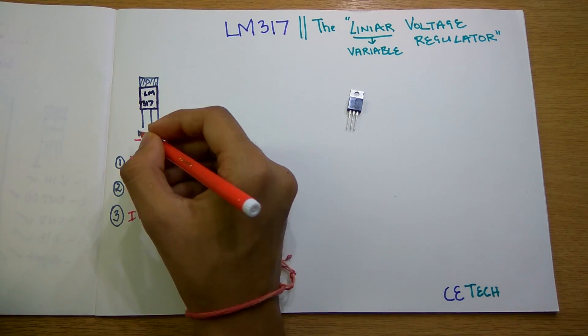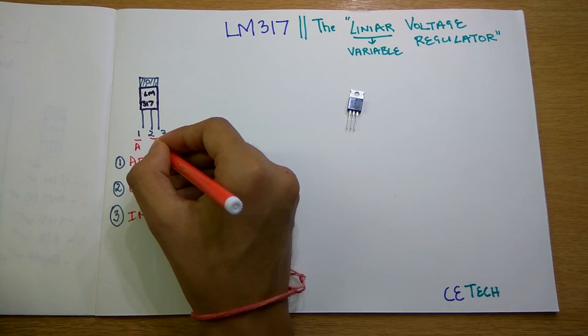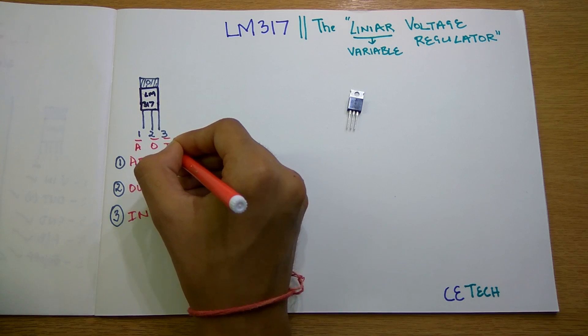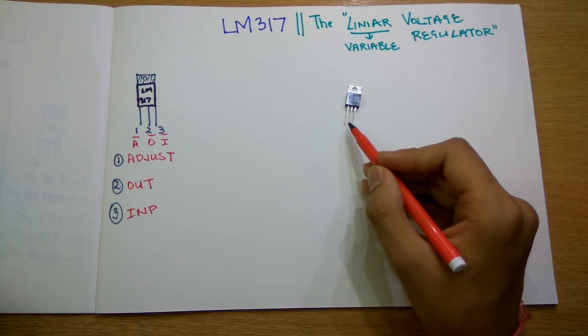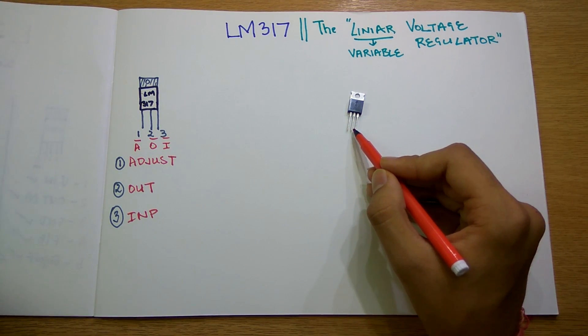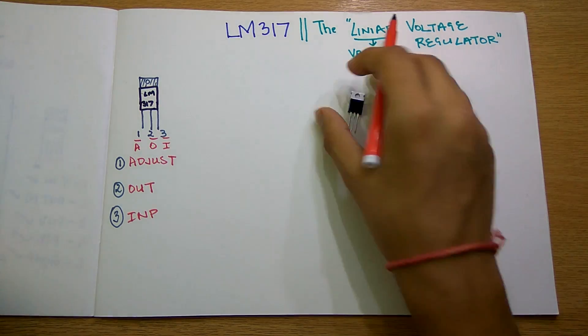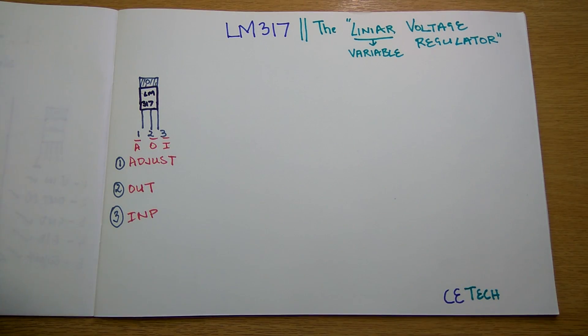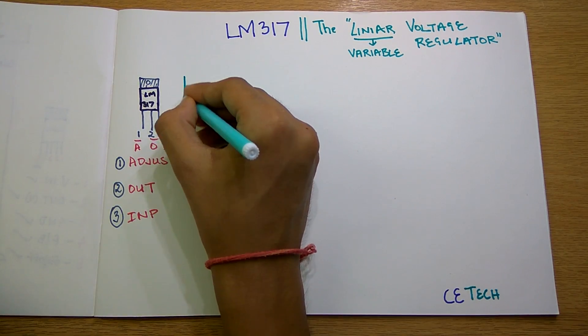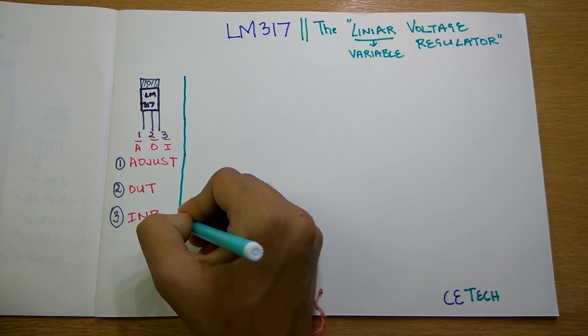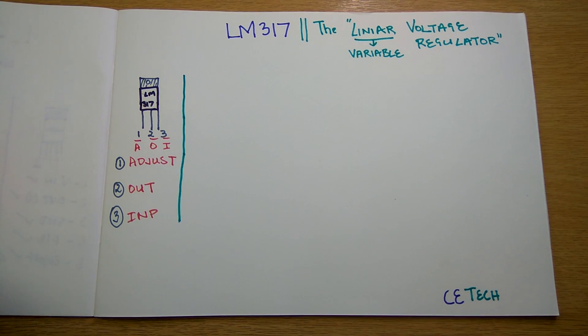We will label these pins as A, O, and I. So these three pins: the adjust pin, the output pin, and the input pin.